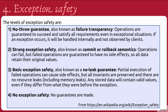The levels of exception safety are: first, the no-throw guarantee, also known as failure transparency — operations are guaranteed to succeed and satisfy all requirements even in exceptional situations, and if an exception occurs, it will be handled internally and not observed by the clients. Second is strong exception safety, also known as commit or rollback semantics — operations can fail, but failed operations are guaranteed to have no side effects so that all data retains its original values.